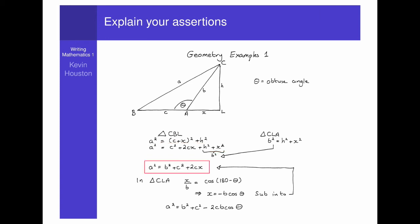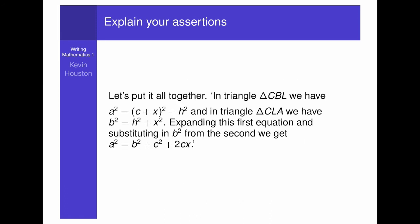The line after that, a squared equals b squared plus c squared plus 2cx, is even worse. Where does it come from? Presumably that curly bracket on its side with b squared under it and the arrow has something to do with it. Well, indeed it does. But what the student has done is replace the h squared plus x squared with b squared. I.e. they have substituted this into the equation involving a squared. So, why didn't they say that?